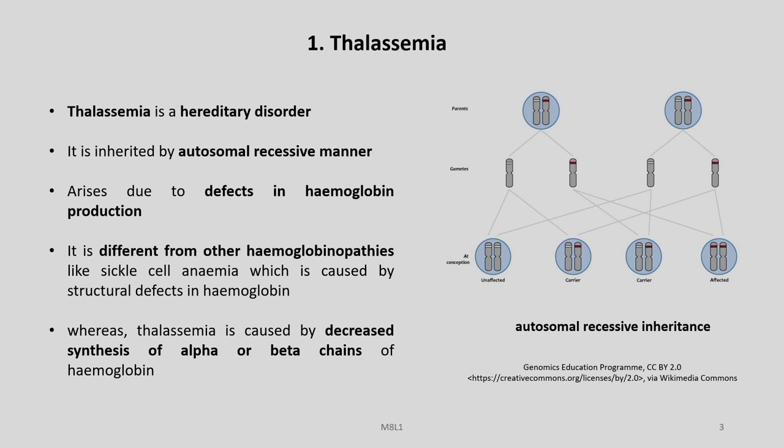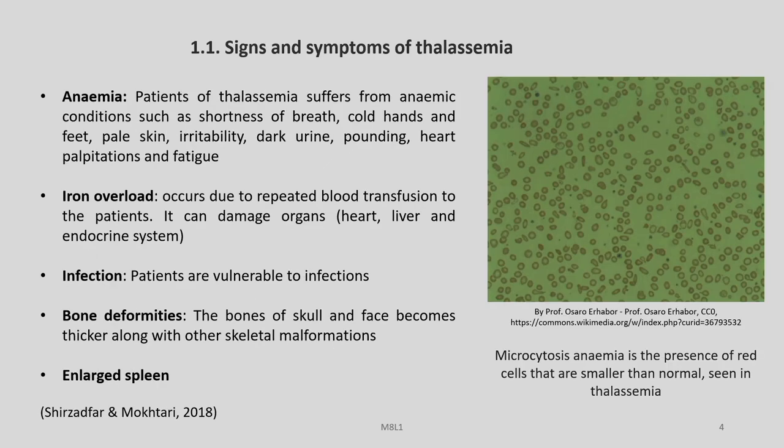This disease arises due to defects in hemoglobin production. It is different from other hemoglobinopathies like sickle cell anemia, which is caused by structural defects in hemoglobin, whereas in thalassemia there is decreased synthesis of alpha or beta chains of the hemoglobin. Signs and symptoms include anemia, iron overload, infection, bone deformities, and enlarged spleen.